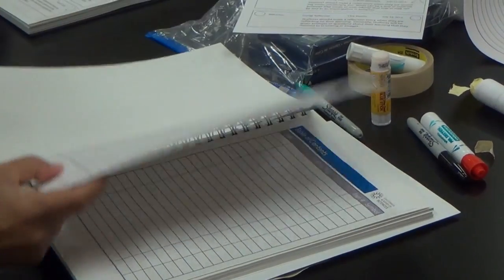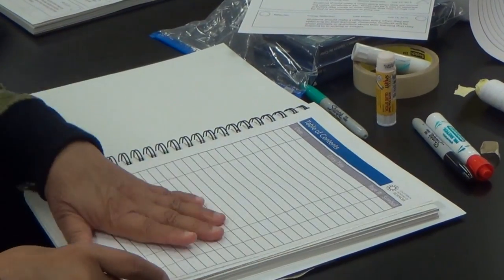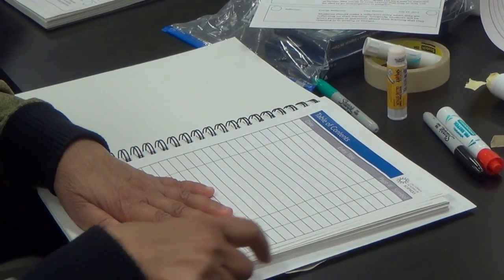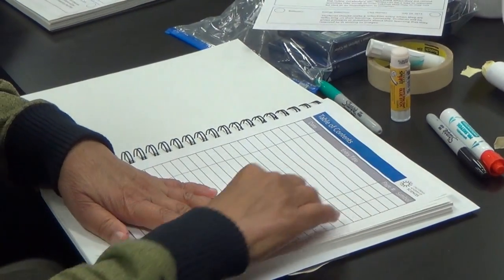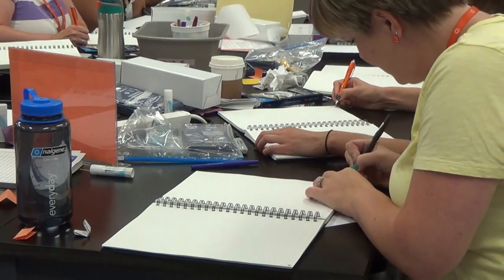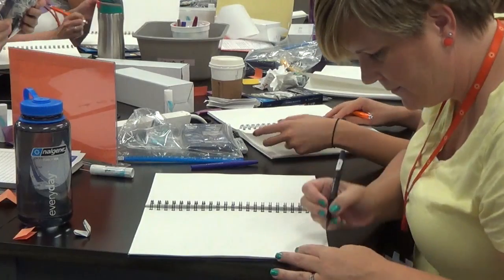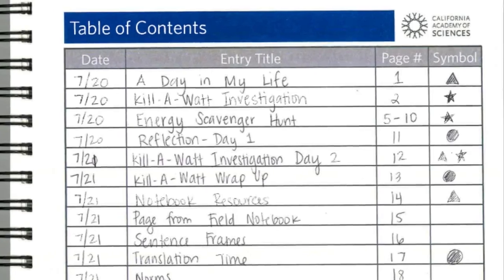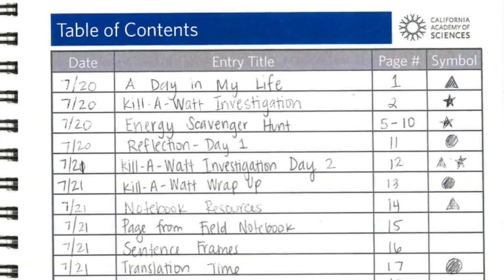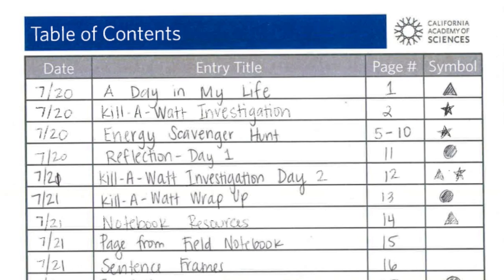Lessons typically start by having students open to a new page in their notebook and adding a heading for the day's lesson, along with the date and any other relevant information. This same information also gets placed in the table of contents at the front of their notebook. Students should record the page, the date, and which symbol they are using.